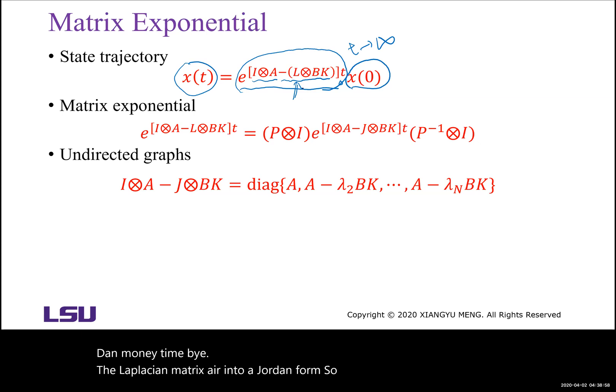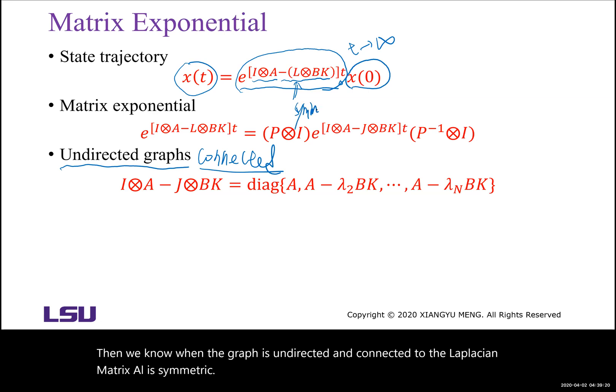So let's assume here the graph is undirected and connected. Then we know when the graph is undirected and connected, so the Laplace matrix L is symmetric and it is a positive semi-definite matrix.